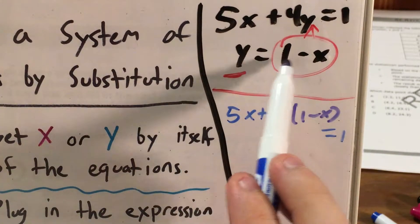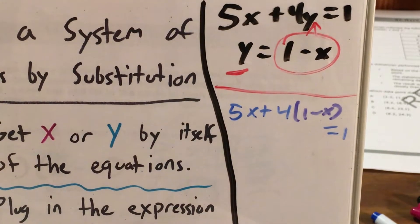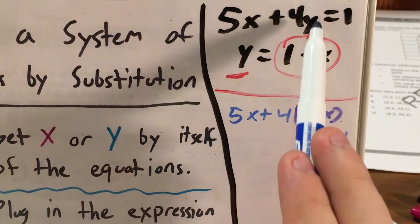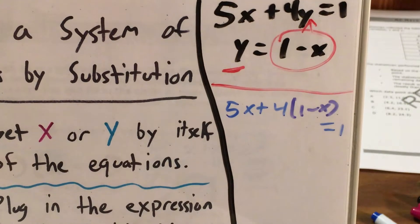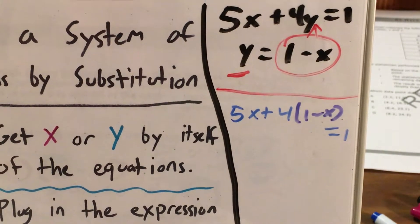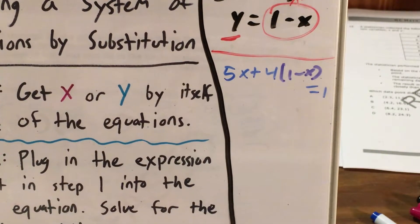Now notice how I have not changed the way this equation looks at all, except that instead of y, I just wrote 1 minus x. And that is the basic idea of substitution. If we know that our letter equals something, even if that's an expression that uses another letter, we can plug that expression in in order to have an easier time figuring out one of our letters and get closer to solving this system.